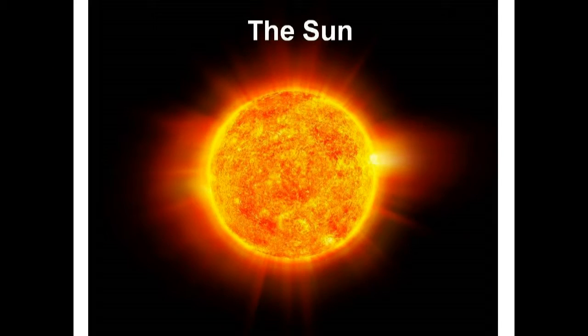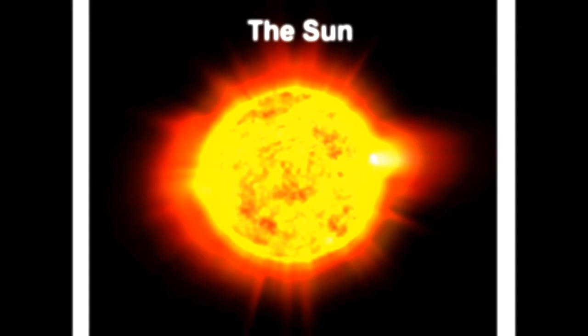During daytime, we see the sun in the sky. The sun is a star too. It is like a huge ball of fire. See, the sun seems much bigger and brighter than other stars because it is much closer to Earth than other stars.